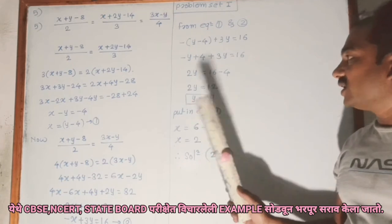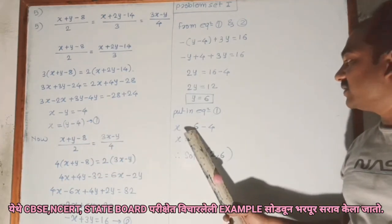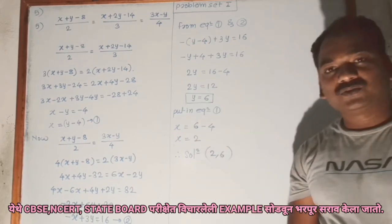Putting this in equation number 1, with y equal to 6: x = 6 - 4, which is 2. Finally, we get the solution (2, 6).